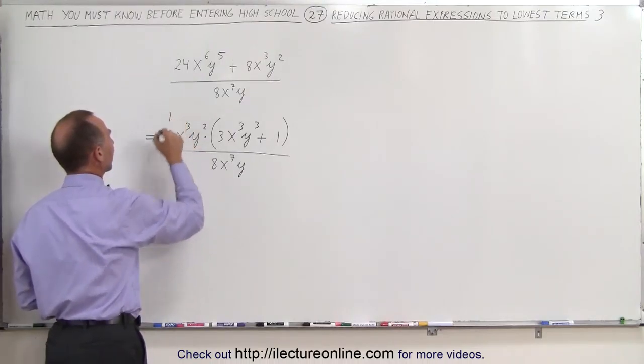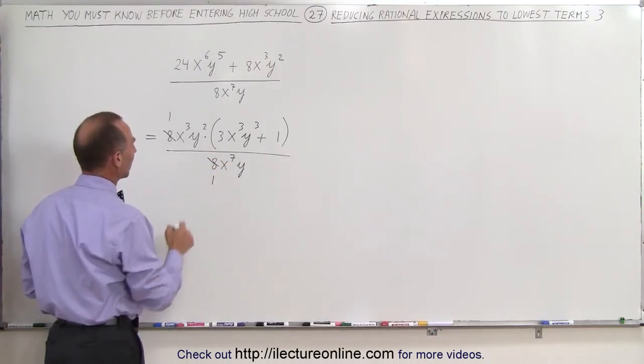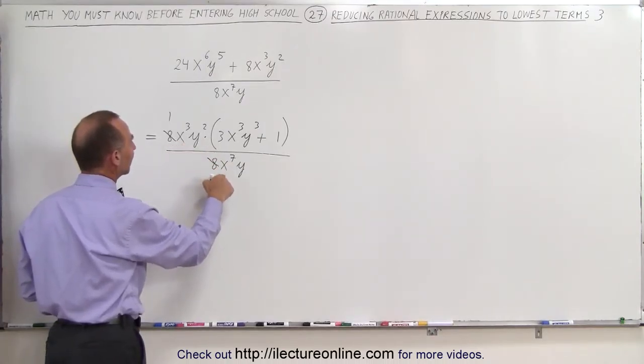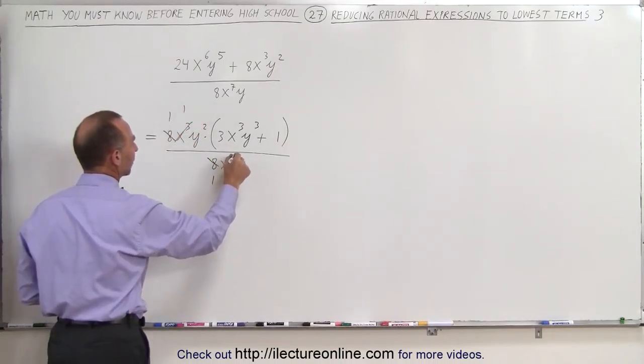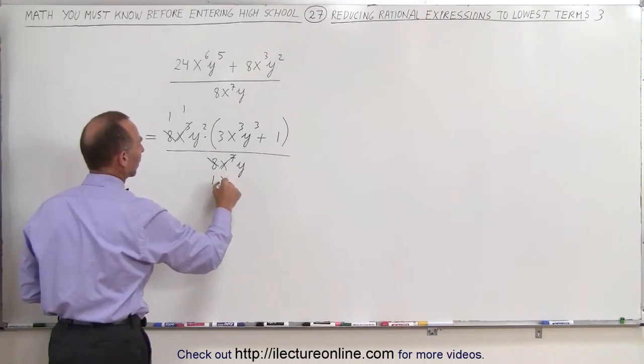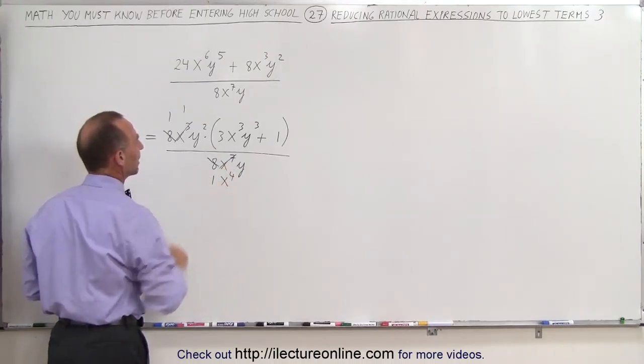Notice that the top can be divided by 8, and the denominator can be divided by 8. We have an x cubed and an x to the 7th, so I can factor out an x cubed and simplify, and this becomes, instead of x to the 7th, this becomes x to the 4th, because x to the 7th divided by x to the 3rd gives me x to the 4th.